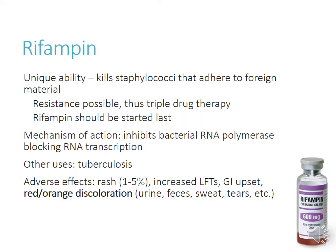Rifampin has a unique ability to kill staphylococci adhering to foreign materials, making it ideal for prosthetic valve endocarditis. However, resistance is quickly gained, so when initiating triple drug therapy it's important to start rifampin last — suppress bacteria with vancomycin and gentamicin first, then add rifampin. If started first, resistance can develop and lead to higher failure rates.